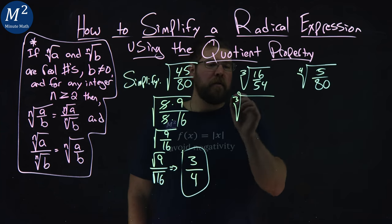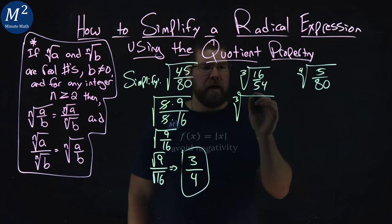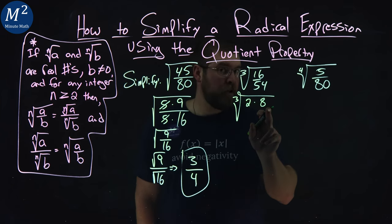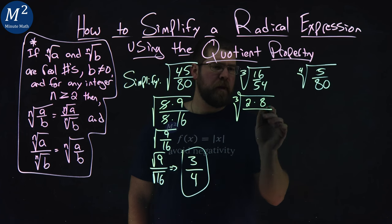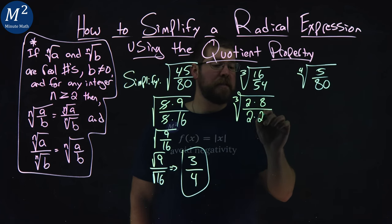16, so keeping together the third root, 16 is 2 times 8. 8 is a perfect cube, 2 cubed.